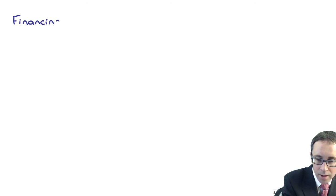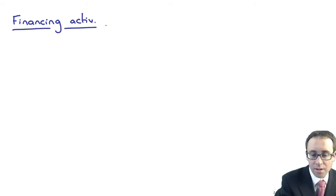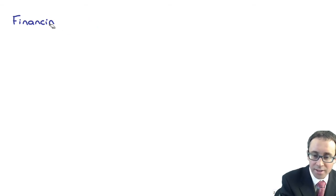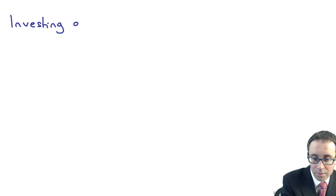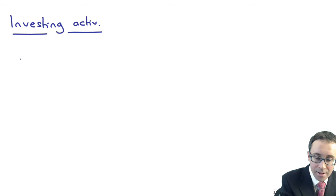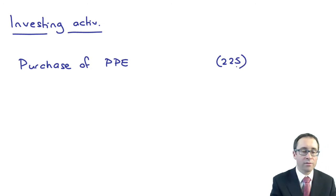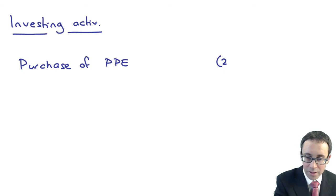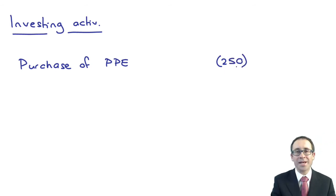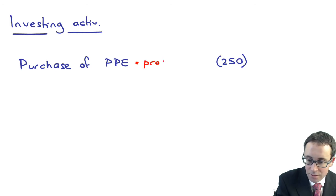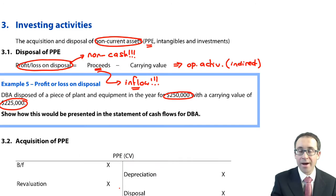Further down — and careful, not financing activities, slight Freudian slip there — we are looking at your investing activities, because we've invested in PPE. So you have the purchase of property, plant and equipment. Just showing it's easy to make a mistake in the exam. The purchase of PPE is essentially an outflow, which relates to those proceeds.